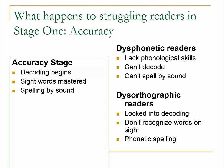On the other hand, the little dysorthographic readers at this stage are locked into decoding. They don't recognize words on sight. They decode the same word over and over. But you always know what they're trying to write, even if it's misspelled, because their misspellings are very phonetic.